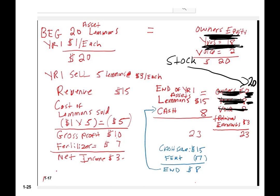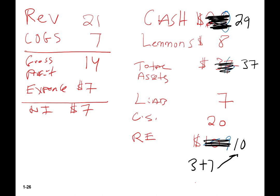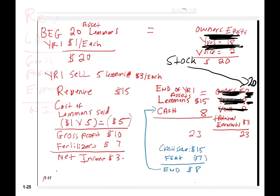A student asks: can you express retained earnings as net income minus dividends? Yes, excluding the beginning balance. In year two, the beginning balance is last year's ending balance of $3. In year two we sell seven lemons at $3 each, generating revenue of $21. Those lemons cost $1 each — cost of goods sold of $7 — gross profit of $14. One reason there's a difference between cash and net income: we got cash for lemons but also recognized the cost of those lemons, so that's one of many reasons the cash generated differs from net income.